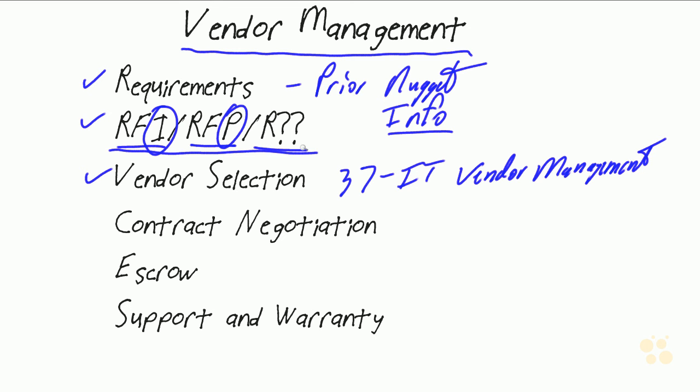And then there are question marks, because many organizations have their own subtle variations on this. We have requests for quotation, we have information requests, and others. But bottom line, principally we work through this process at the 'I need information' level and the 'I need a proposal' level. Then we go through the vendor selection process, as discussed in Nugget 37, and then we go into contract negotiation.